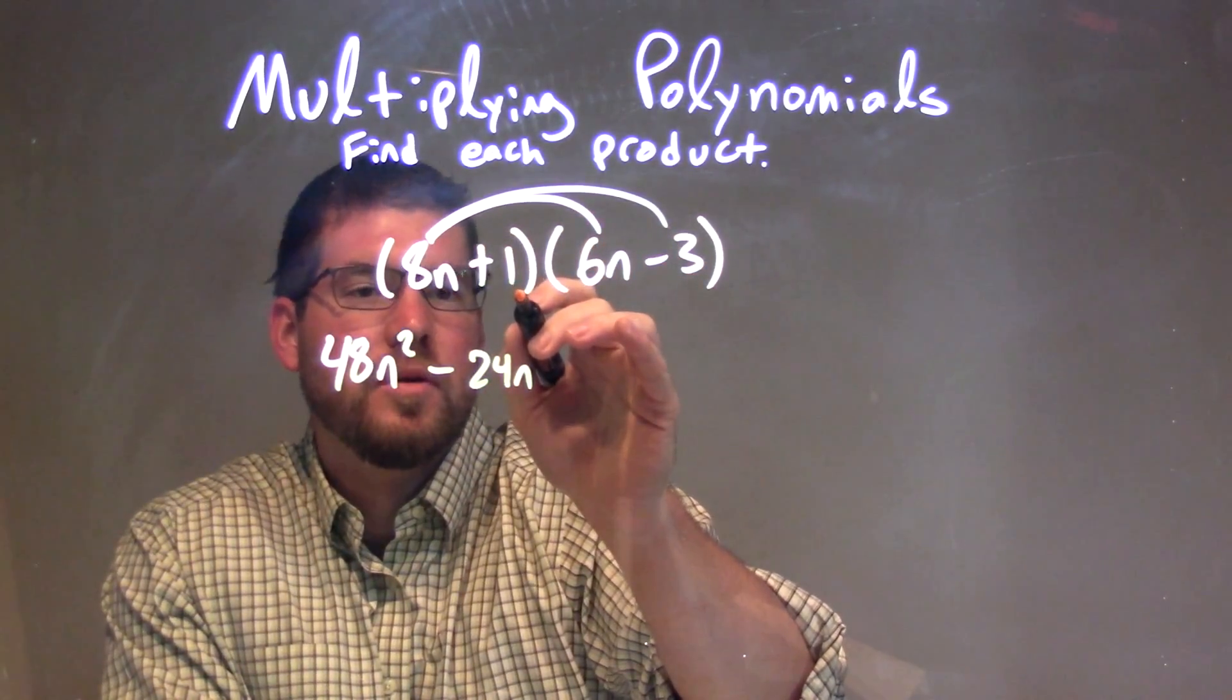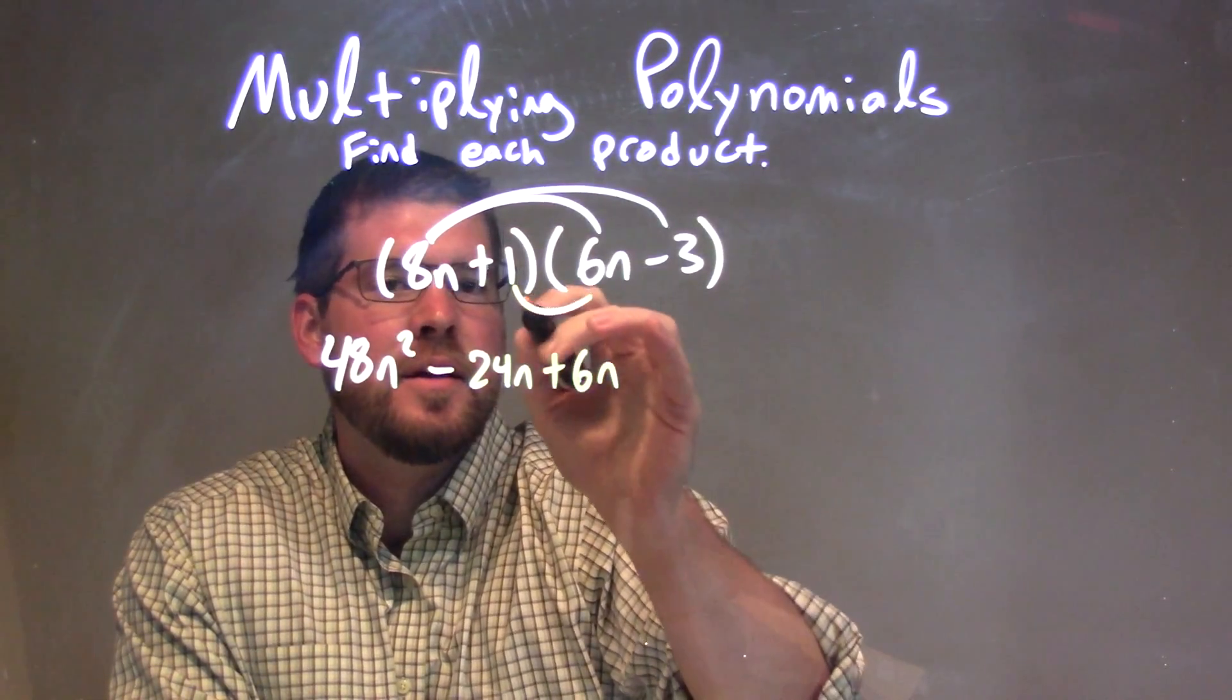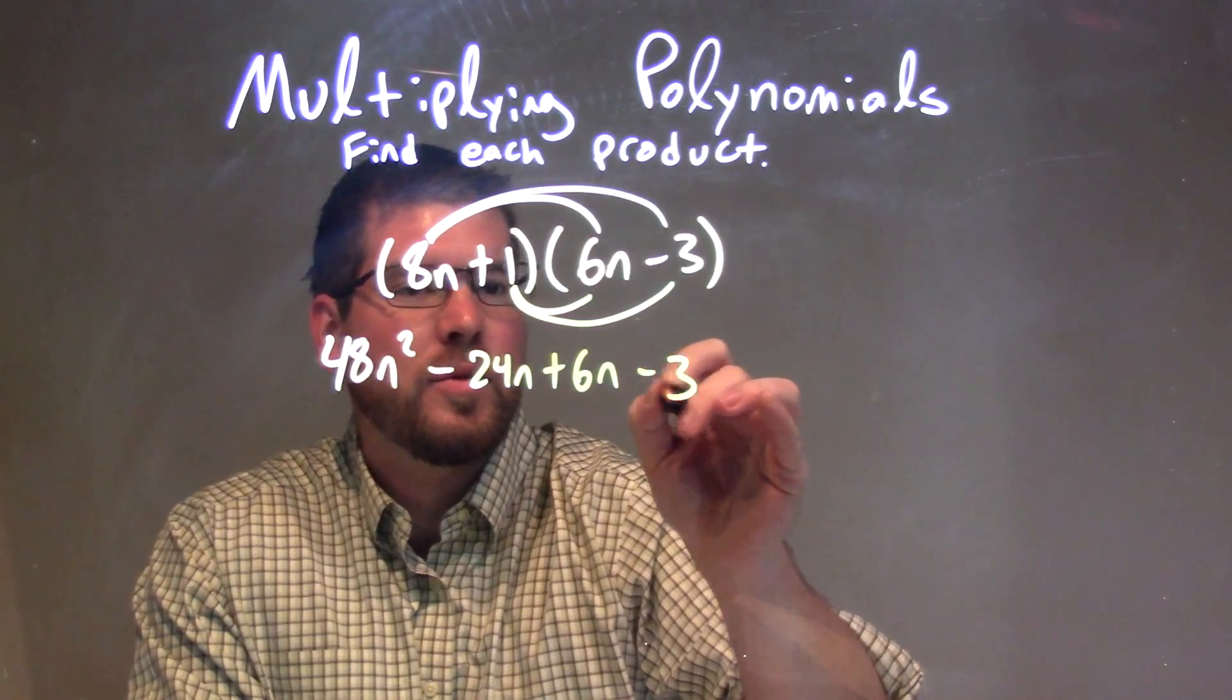Now we go to the ones. 1 times 6n is 6n, and 1 times -3 is -3.